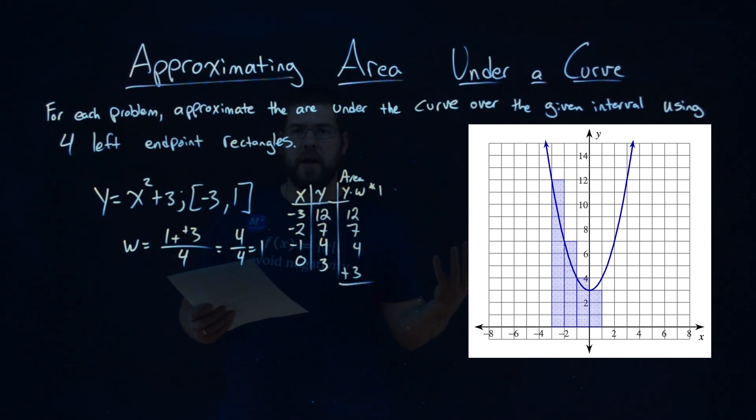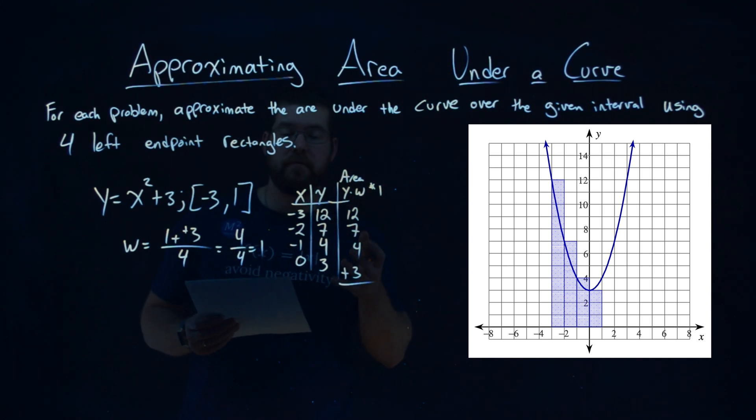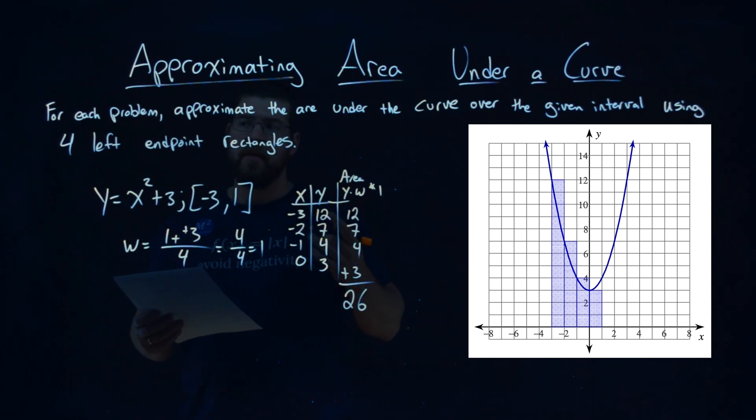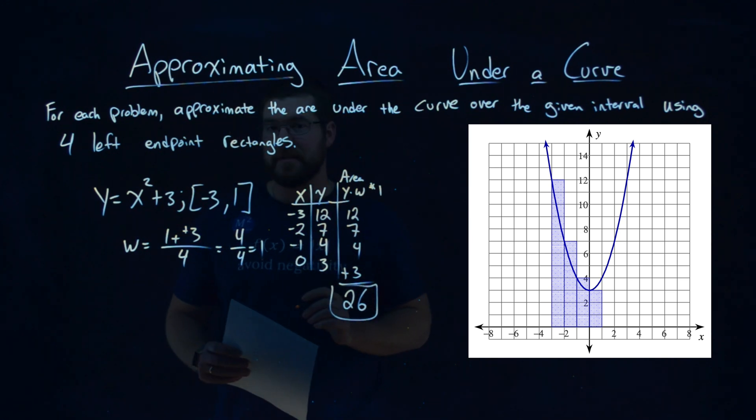So to find the overall area under the curve with this approximation, we add them up. When you add up 12, 7, 4, and 3, you get 26. And that's it. The area under the curve, given four left endpoint rectangles, is 26.